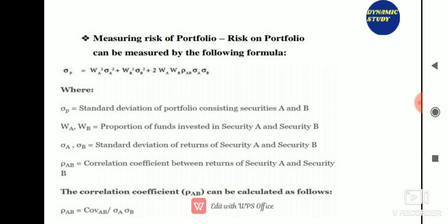Risk of a portfolio can be measured using the standard deviation formula for a portfolio consisting of securities A and B, where WA and WB are the proportions of funds invested, sigma A and sigma B are the standard deviations of returns of securities A and B, and the correlation coefficient between the returns of A and B equals covariance divided by sigma A times sigma B.